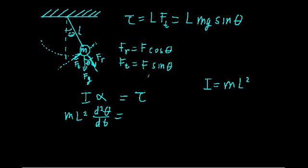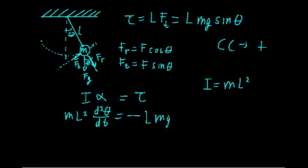I nearly forgot to do one important thing: I forgot to assign a direction. So let's say it's a right-handed system, which means we're going to define counterclockwise motion as a positive torque. What that means is that for this system, our torque is going to be negative LMg sine theta, because the torque is going to be in the opposite direction of our displacement. So if theta is positive, the torque is negative. Over here, we'd have a negative theta and a positive torque.